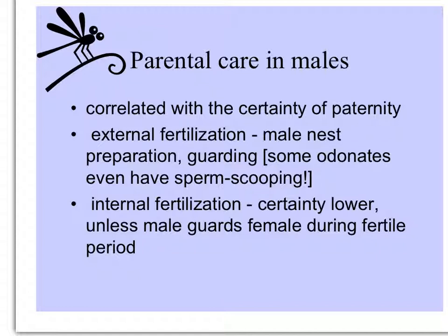males mate with females, putting in a spermatheca or sperm packet that will fertilize the eggs when the females lay them, and subsequent males scoop out the prior male's spermatheca. With animals that have internal fertilization, the certainty of paternity is lower unless the males guard the female during the fertile period.